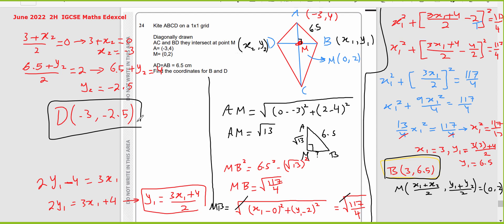To verify: the gradient for MB is the same as the gradient of BD, since B and M both lie on line BD. The gradient from the beginning was 3 over 2. Check using coordinates of B(3, 6.5) and D(-3, -2.5) — if the gradient equals 3 over 2, the answers are confirmed correct. Thank you so much.